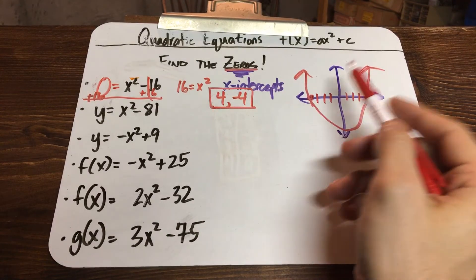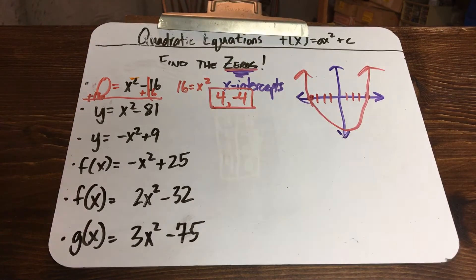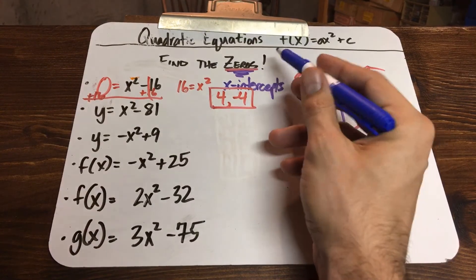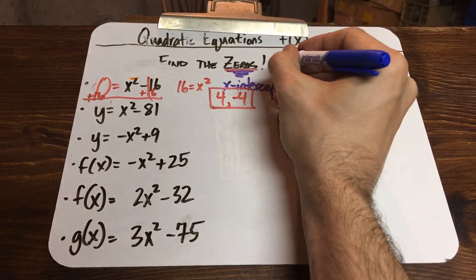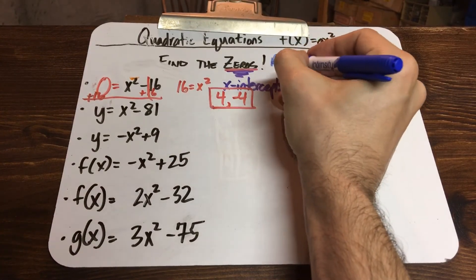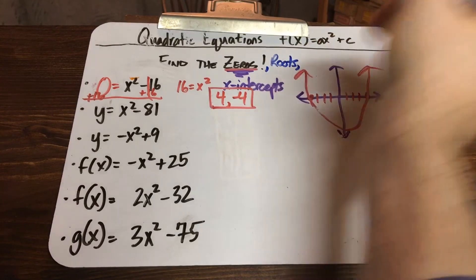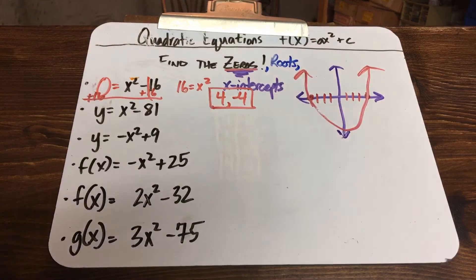The zeros are the same thing as x-intercepts. If you hear me say roots, that's another synonym. Zero, x-intercept, roots — they're all interchangeable, they all have the same definition.